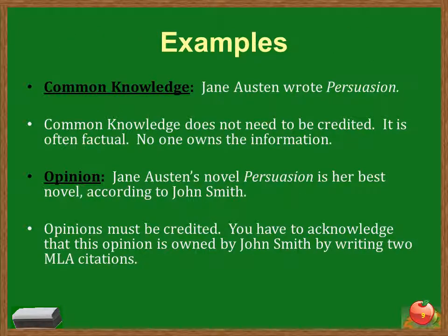Here are two examples to show the difference. Common knowledge would be: Jane Austen wrote Persuasion. It doesn't need to be credited — it's factual and no one owns that information. However, if you wrote 'Jane Austen's novel Persuasion is her best novel, according to John Smith,' you would have to give that author, John Smith, the credit. Opinions have to be credited. You have to acknowledge that it's an idea or a way of phrasing something owned by another person.